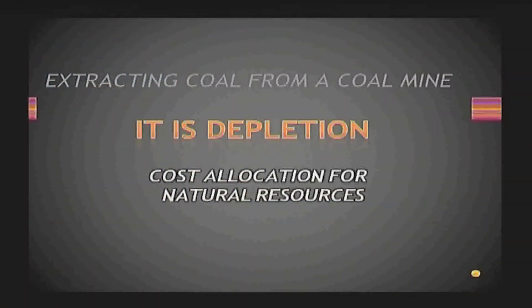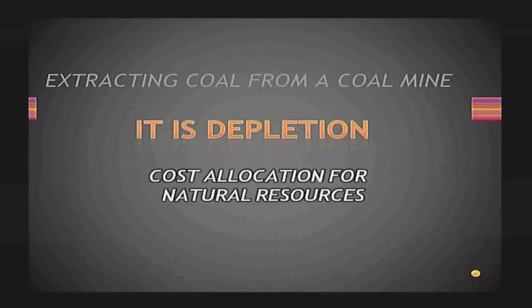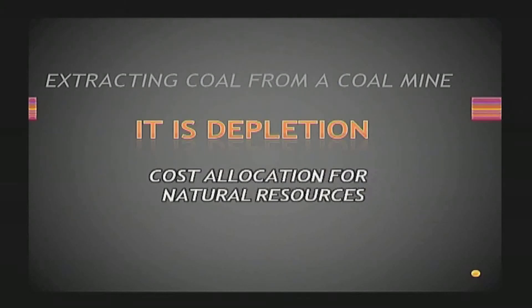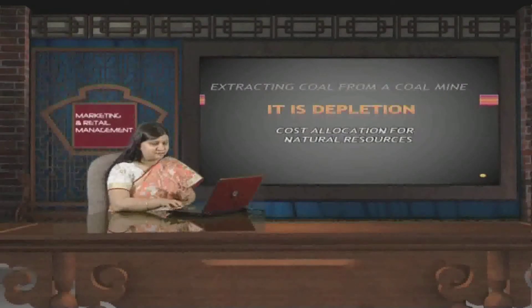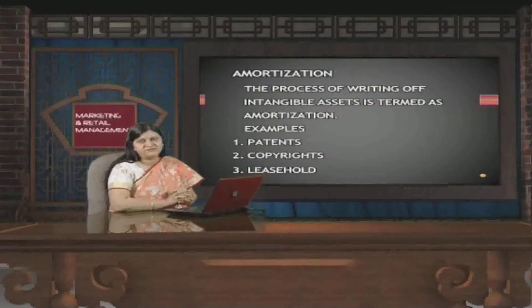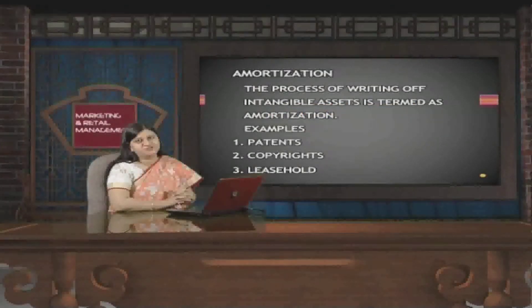An example is extracting coal from a coal mine — the natural resource is being reduced and it cannot be replaced. Under this method, it is called depletion. Cost allocation for natural resources is to be done, and applying this method of accounting for depletion, we are going to reduce the asset's value.